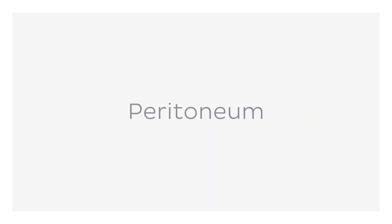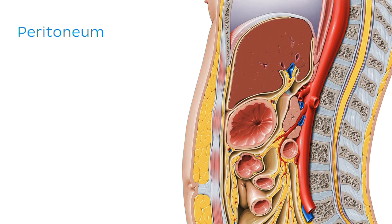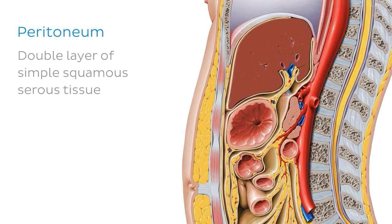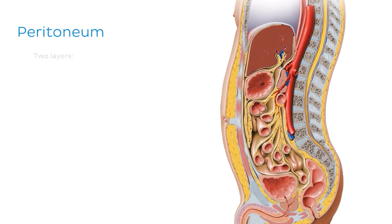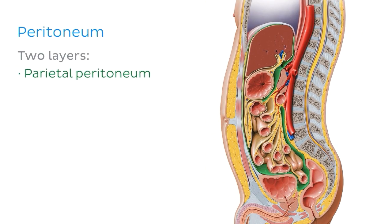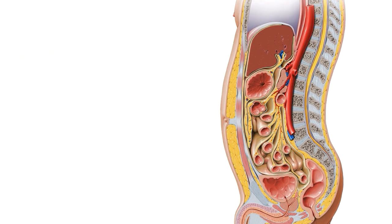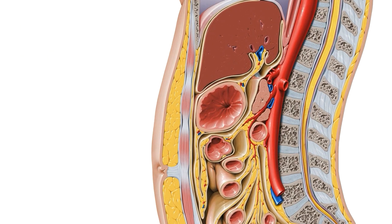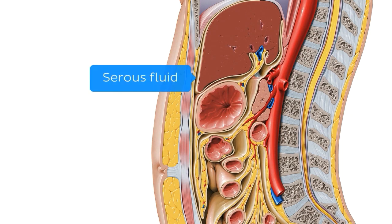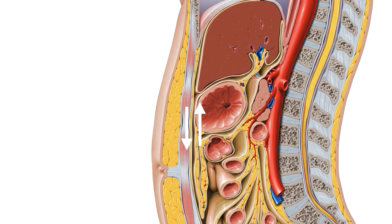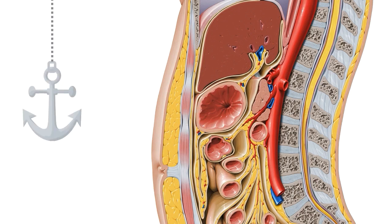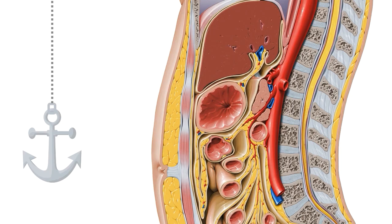First, let's talk about the structure of the peritoneum. The peritoneum is a double layer of simple squamous serous tissue called the mesothelium. There are two layers of peritoneum: the parietal peritoneum and the visceral peritoneum. These two layers are continuous with one another and have a potential space between them filled with serous fluid. This space allows the layers to effortlessly slide over each other, as you can see in our image. Together, both layers anchor organs and provide support for their movements.